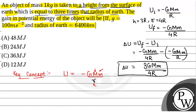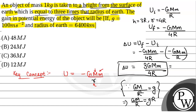Now we know that GM/R² is equal to acceleration due to gravity, small g. So GM/R = gR. Therefore ΔU = (3/4) × (GM/R) × m = (3/4) mgR.